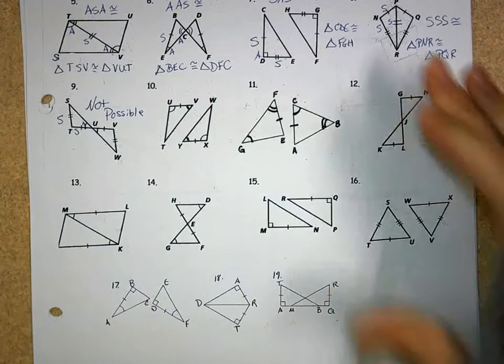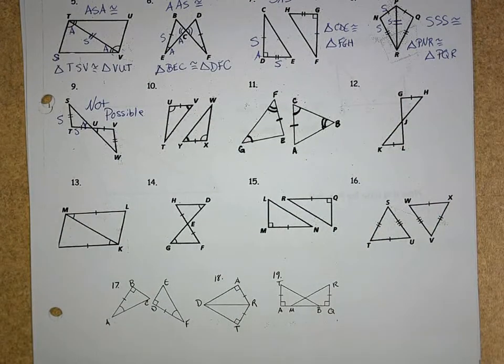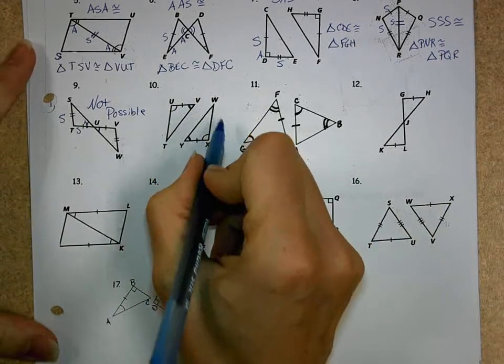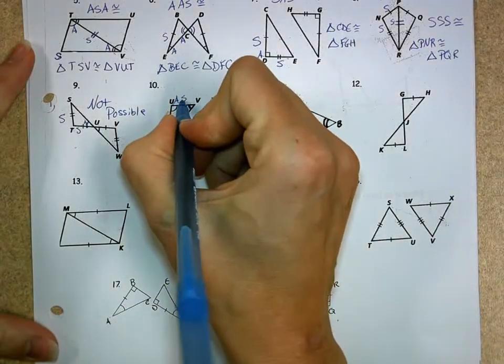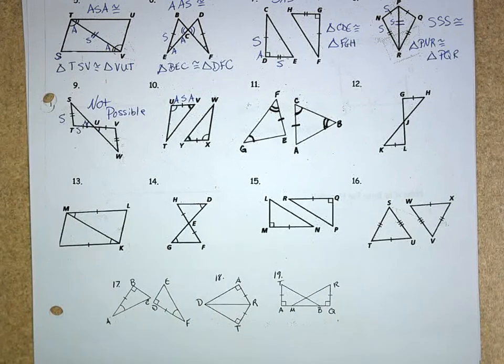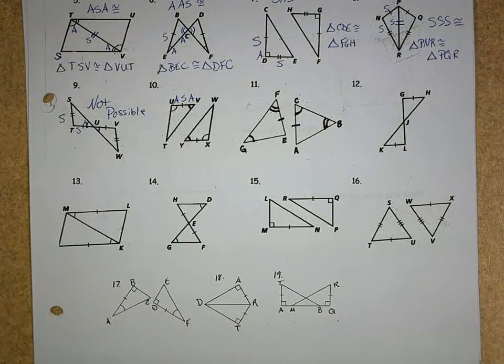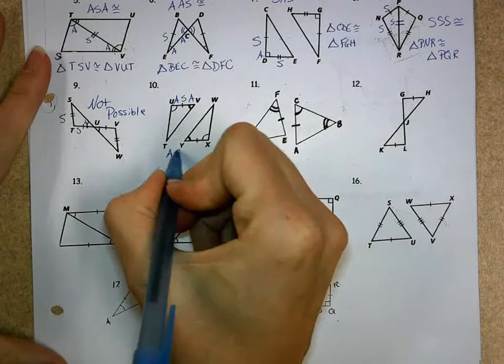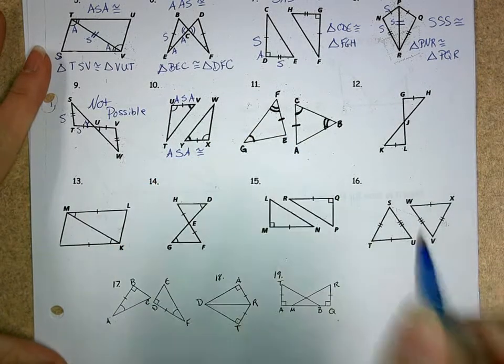Then on the next one, on number 10, we're working with these two triangles, and I look to see how they're marked, and notice I get an angle-side-angle. Remember, angle-side-angle, that side has to be strictly between and included between those two angles. So, by angle-side-angle congruence, this does work.